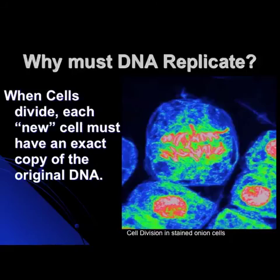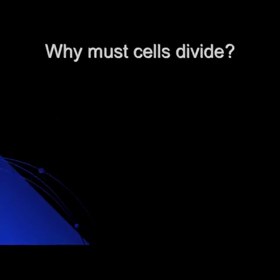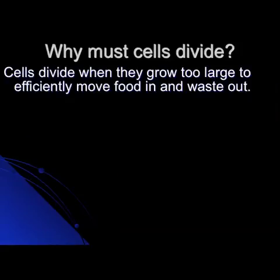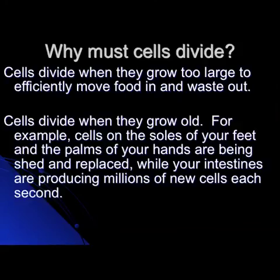So we go from one cell to two. It's incredibly important that we have two identical strands of DNA. Cells divide when they grow too large to efficiently move food in and waste out. Cells also divide when they grow old and get worn out — the soles of our feet and palms of our hands are constantly being shed and replaced. Something like every few weeks you produce all new outer skin cells.